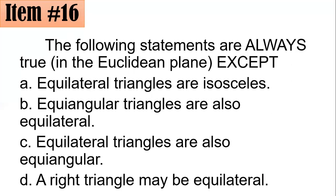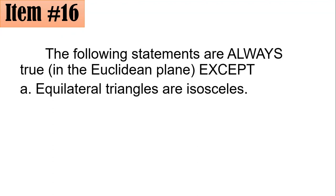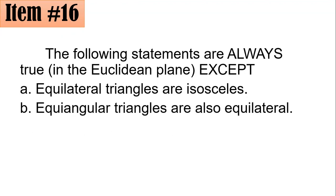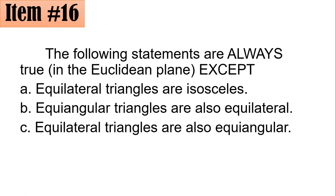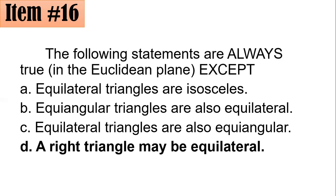Number 16. The following statements are always true in the Euclidean plane except one. All equilateral triangles are isosceles — true. Equiangular triangles are also equilateral — true. Equilateral triangles are also equiangular — true. However, letter D — a right triangle may be equilateral — is false. An equilateral triangle has all interior angles measuring 60 degrees, so it can never have a 90-degree angle. Hence, D is the correct answer.